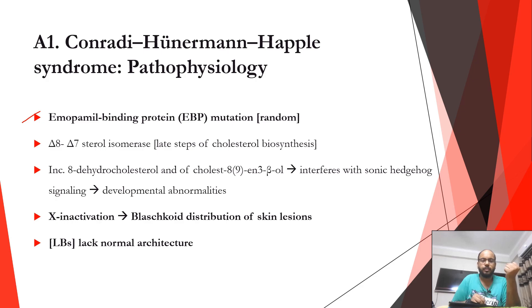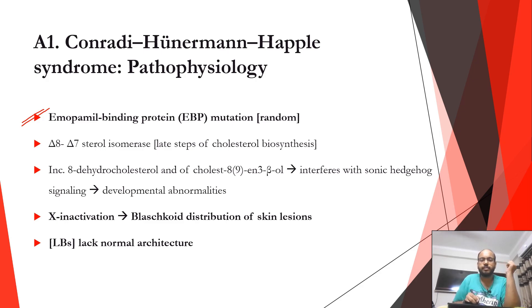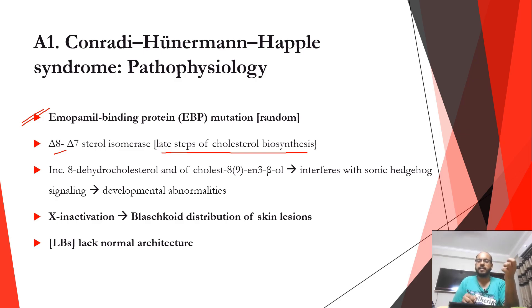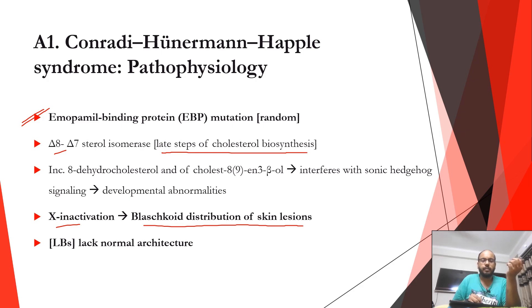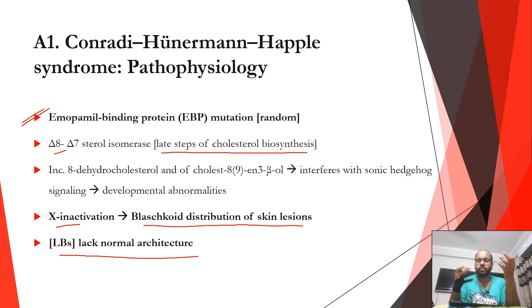The pathophysiology lies in the emopamil-binding protein. When the EBP gene is mutated, the protein cannot properly function, causing problems in the late steps of cholesterol biosynthesis, specifically the delta-8 to delta-7 sterol isomerase enzyme. Just remember the problem lies in the later steps of cholesterol synthesis. Because of this, lamellar bodies lack normal architecture — they are filled with lipids required for proper cornified envelope formation.